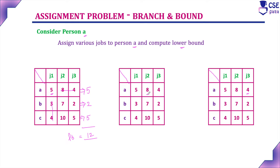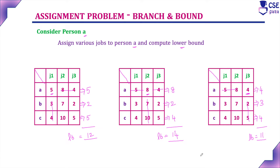If assigning the second job to person A, its cost is 8. The same row and same column cannot be assigned to others. Among the remaining jobs, for B the least is 2 and for C the least is 4, giving a lower bound of 14. Next, assigning the third job to person A has a cost of 4. Among the remaining jobs, for B the least is 3 and for C the least is 4, giving a lower bound of 11. Among the three lower bounds — 12, 14, and 11 — the minimum is 11, so we assign job 3 to person A.